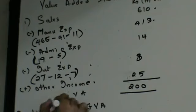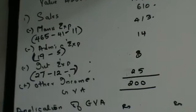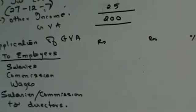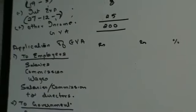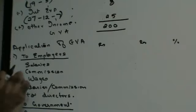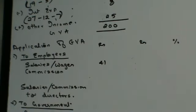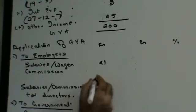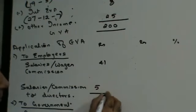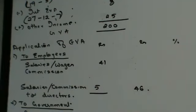Now let's see the application of GVA in rupees and percentage. What were the things we subtracted? You add 41 which was salary, wages, bonus and other benefits — so salary and wages together = 41. Then you have salary to directors = 5. So this comes out to 46.